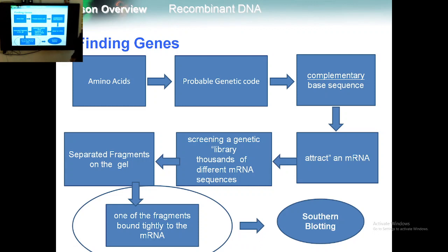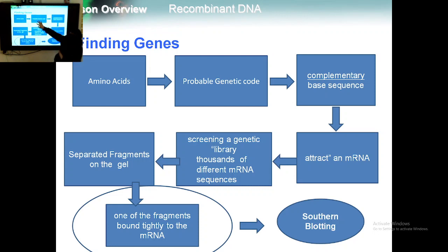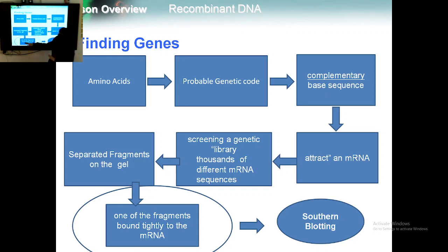He worked back from the protein using the central dogma in reverse — from protein to amino acid to probable genetic code to complementary sequences — then found the mRNA that fit this sequence. He separated the mRNA and sequences on the gel, and the fragment that bound tightly and specifically to one mRNA identified the gene for that protein. We call this technique Southern blotting.